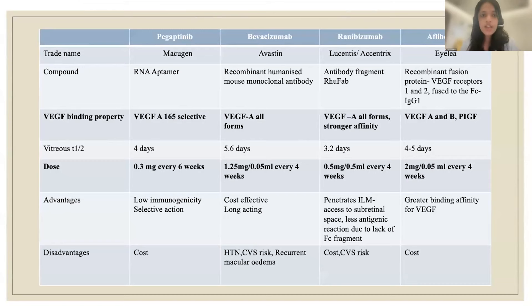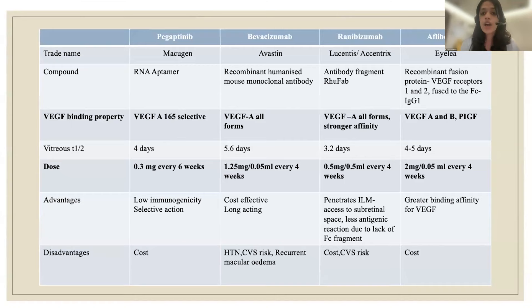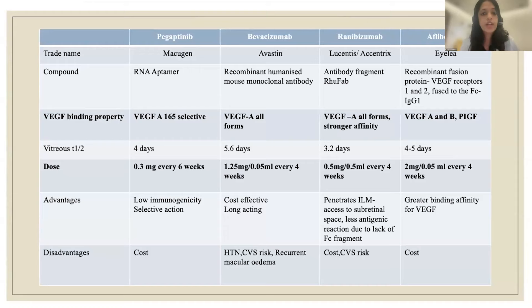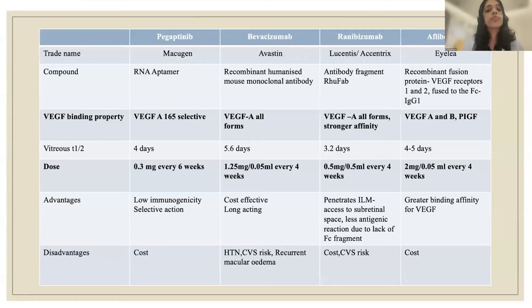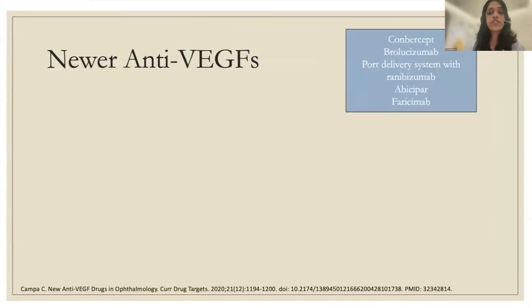Reviewing the anti-VEGFs: pegaptanib is less used now since ranibizumab and aflibercept have better affinity to VEGF-A. Bevacizumab and ranibizumab both attach to all forms of VEGF-A, with ranibizumab having stronger affinity. Aflibercept additionally binds placental growth factor, making it more effective. Doses: pegaptanib 0.3 mg every 6 weeks; bevacizumab 1.25 mg/0.05 ml every 4 weeks; ranibizumab 0.5 mg/0.05 ml every 4 weeks; aflibercept 2 mg/0.05 ml every 4 weeks. Bevacizumab is widely used despite lacking FDA approval due to its lower cost.